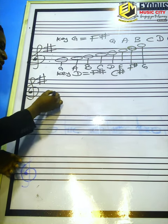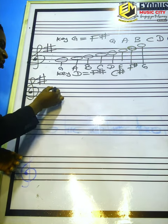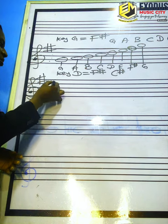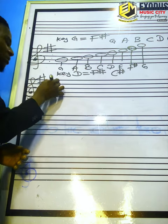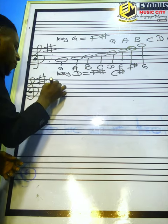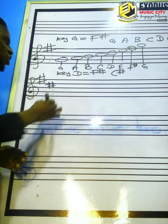Draw your clef sign. After drawing your clef sign, put the key signature before the alphabetical arrangement of the notes. The key signature is F sharp and C sharp. We already know our F sharp, then for C sharp — E, F, G, A, B, C — this space is C, then you fix the sharp.